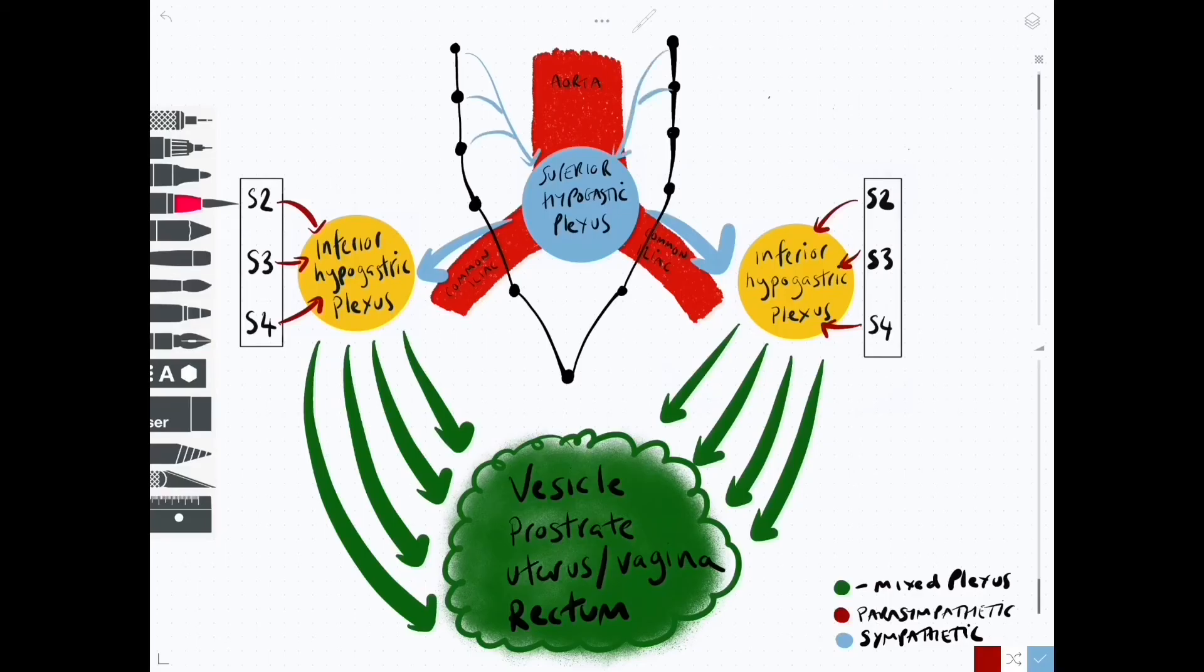We can see some blue lines coming on now. These are thoracolumbar splanchnic nerves arising from T10 to L2. They will leave the sympathetic chain and journey into the superior hypogastric plexus.